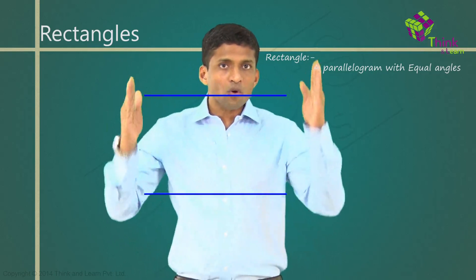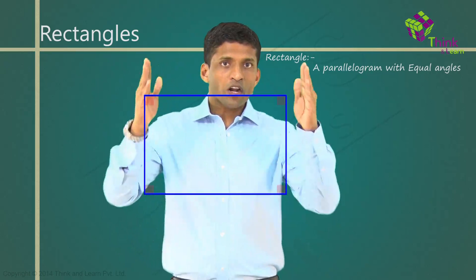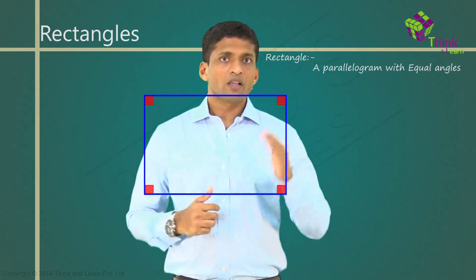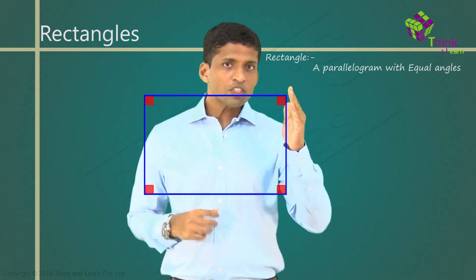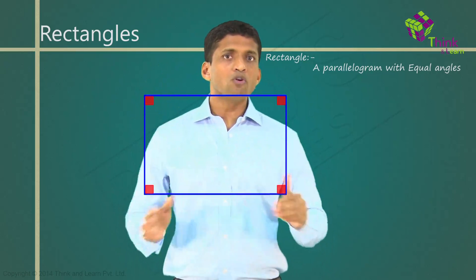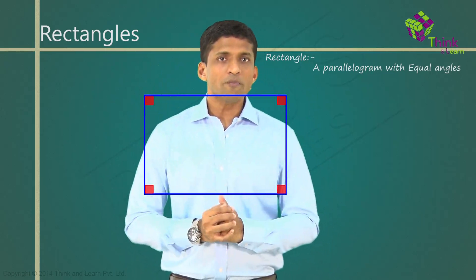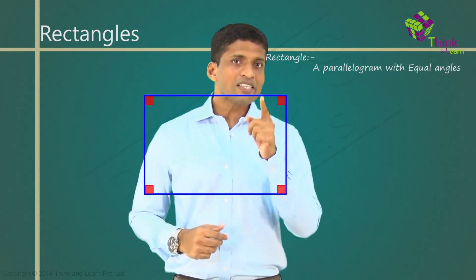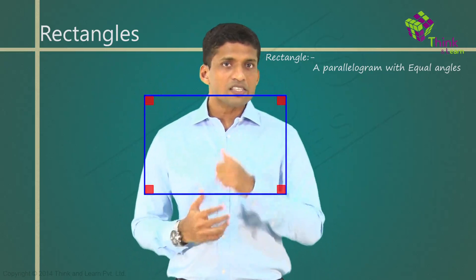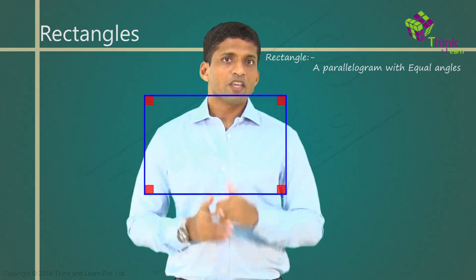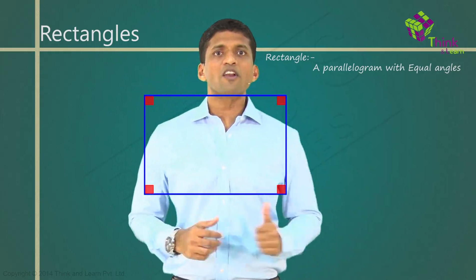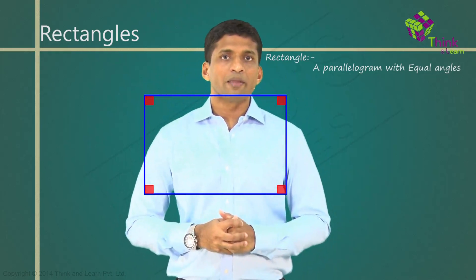So, a rectangle will look like this, where all four angles are equal, because of which all of them will be equal to 90 degrees also, because we know that the sum of angles in a quadrilateral is 360. If all of them are equal, each one of them will be equal to 90 degrees.